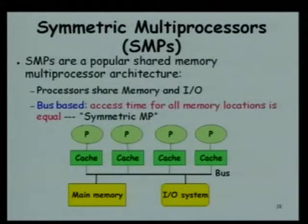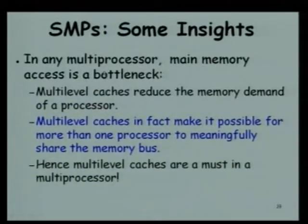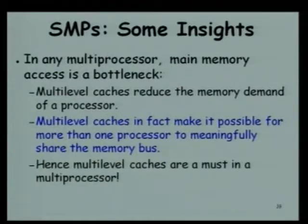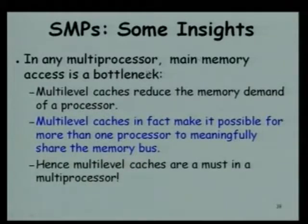The access time is symmetric with respect to all the processors. We will keep this architecture in mind as we proceed. So far in our discussions, we have been saying that the processors are becoming very fast - the cycle time is gigahertz and so on - whereas the memory access is the bottleneck. We had discussed about various techniques to speed up cache and main memory, but even then the main memory is still the bottleneck in modern computers.